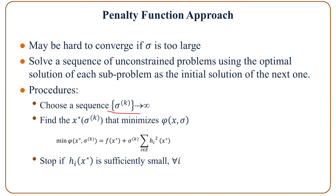Basically what we do is we select a sequence of sigma — let's call it sigma_k — with sigma approaching infinity, and find x* of sigma_k as a function of sigma_k that minimizes the objective function. And we stop if h* is sufficiently small for all i.